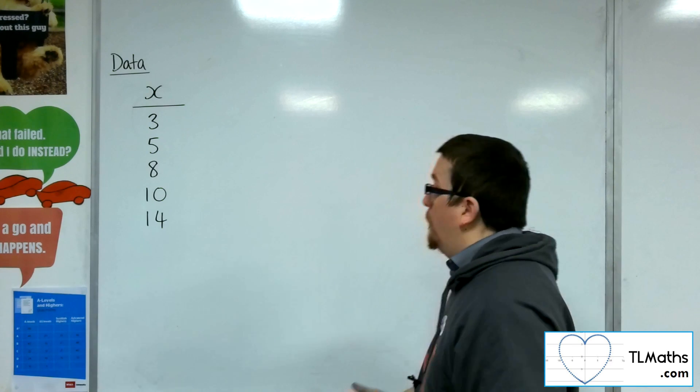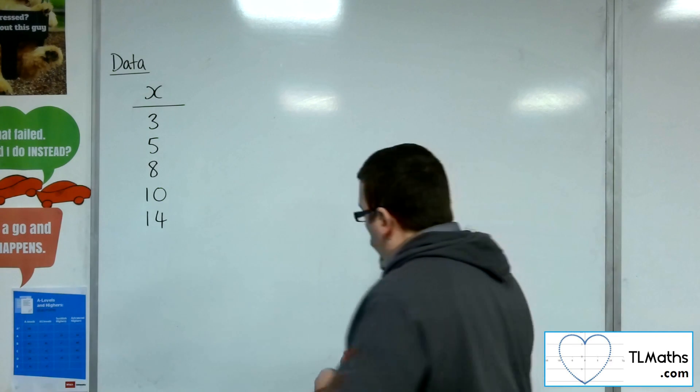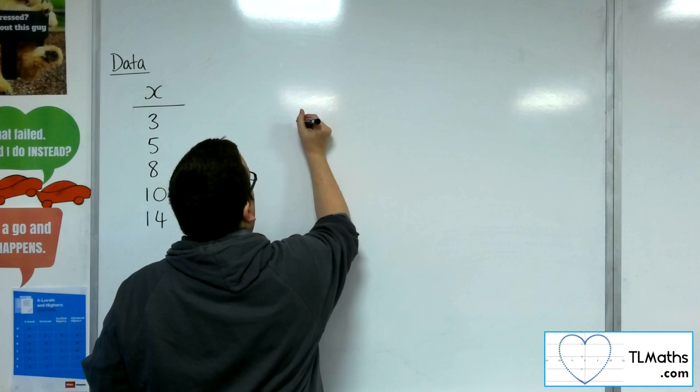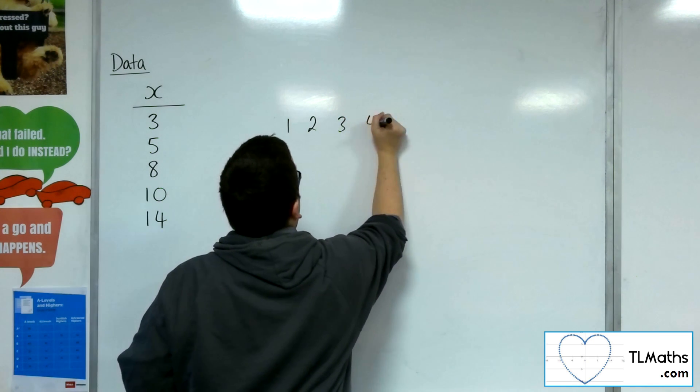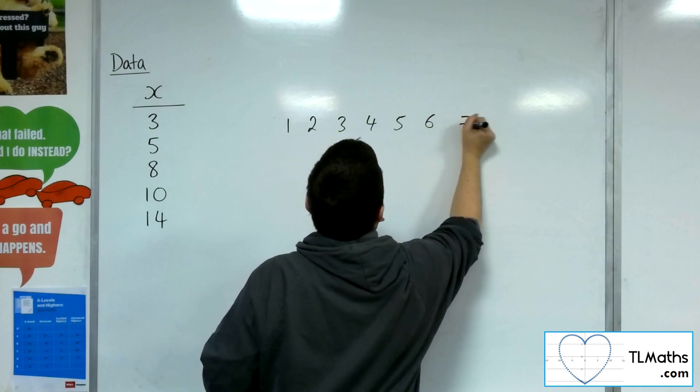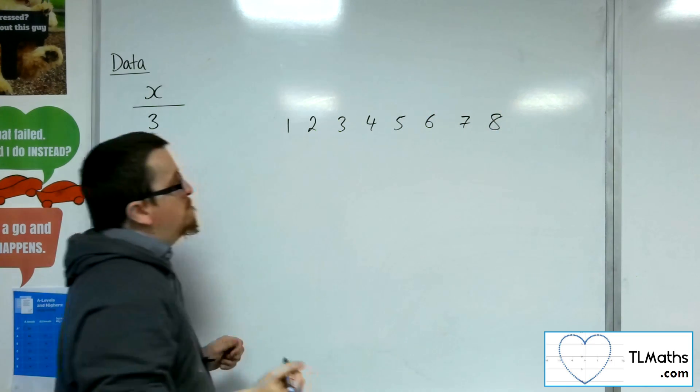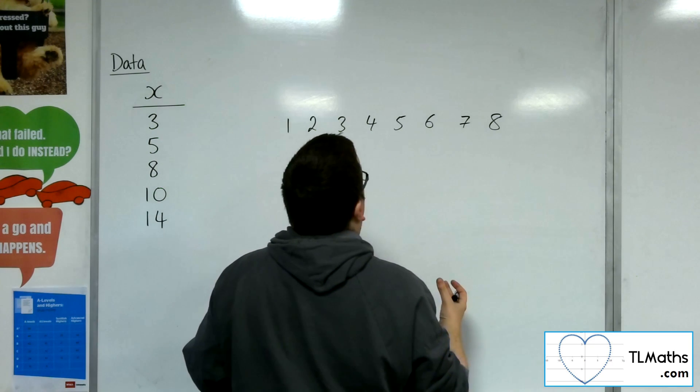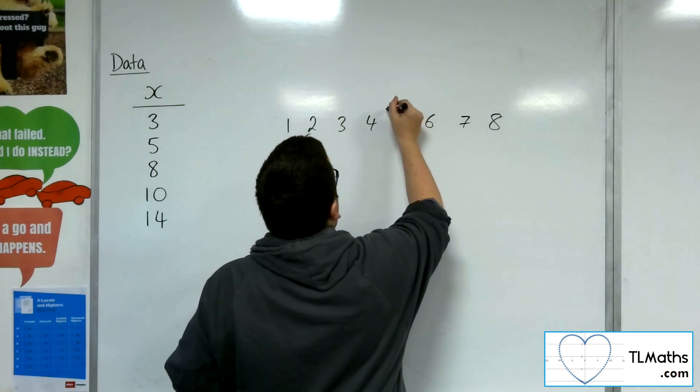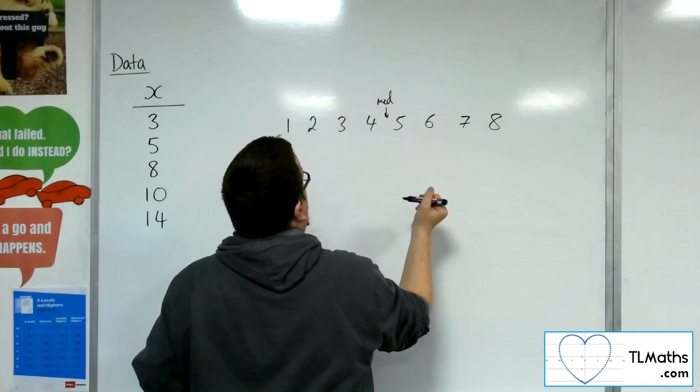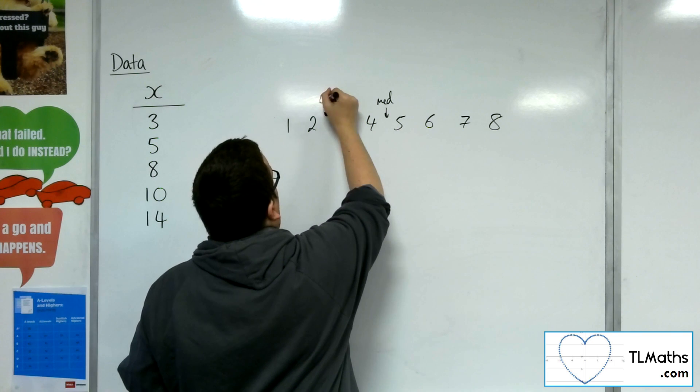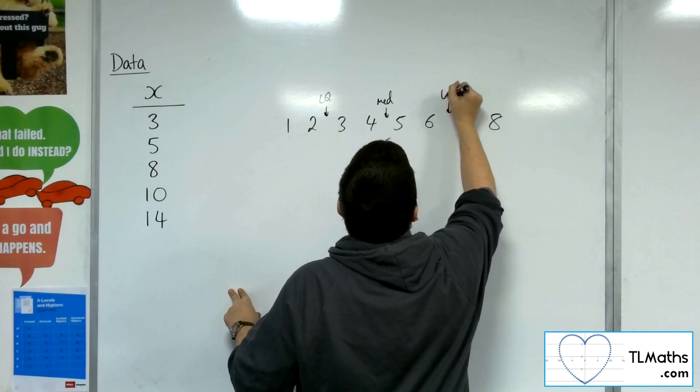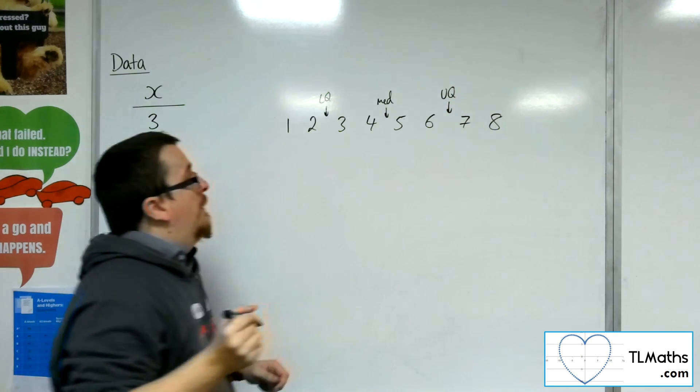So as an example of this, if I had this as my set of data, so let's just choose 1, 2, 3, 4, 5, 6, 7, 8. Then if I was to find the interquartile range, here's where the median position would be, the lower quartile would be here at 2.5, and the upper quartile would be here at 6.5.